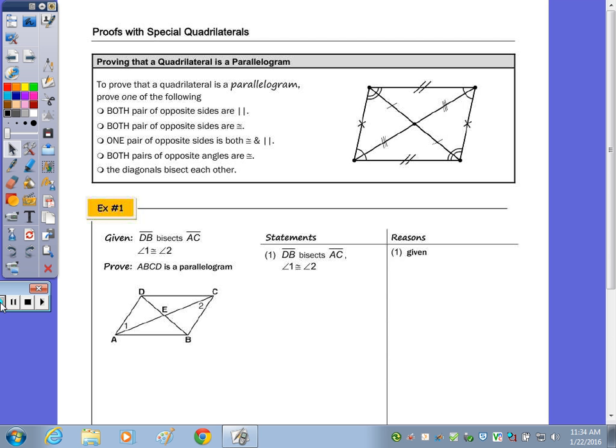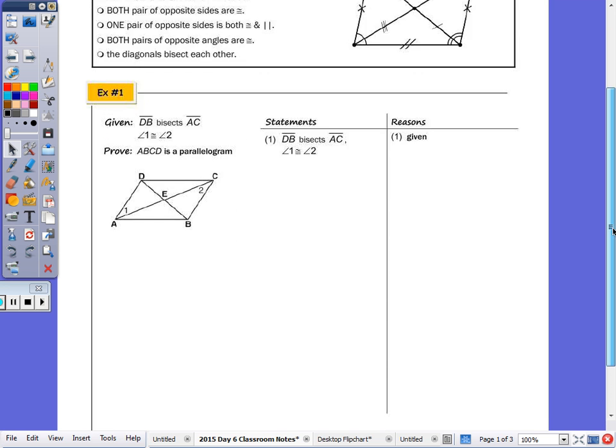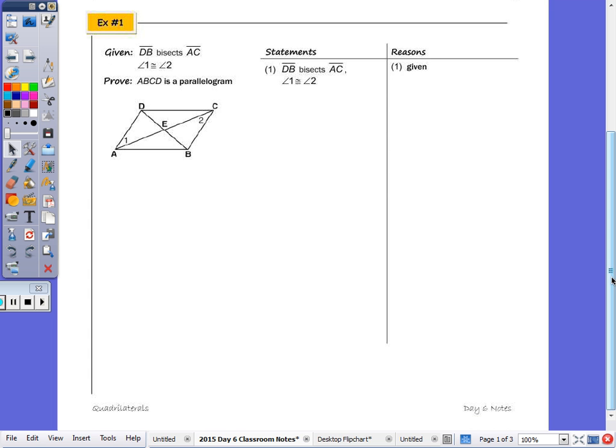In using the givens, it says DB bisects AC. So number two, let's use the givens to help us do the proof. That means if DB bisects AC, that AE is congruent to CE.